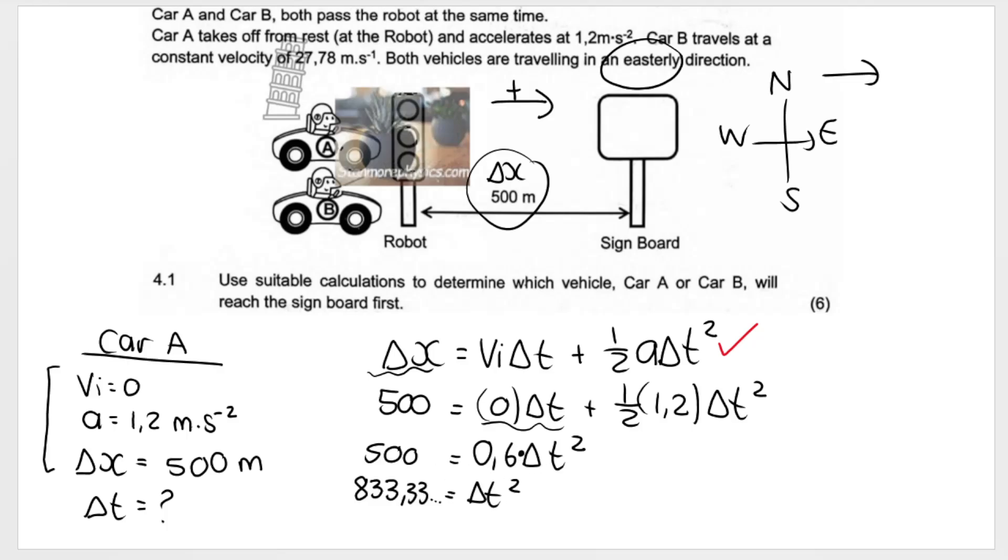We get 833.33. And then remember, we must still square root this number to get Δt time by itself. And for Car A, we get 28.87 seconds. We've just done it for Car A. We now need to do it for Car B.